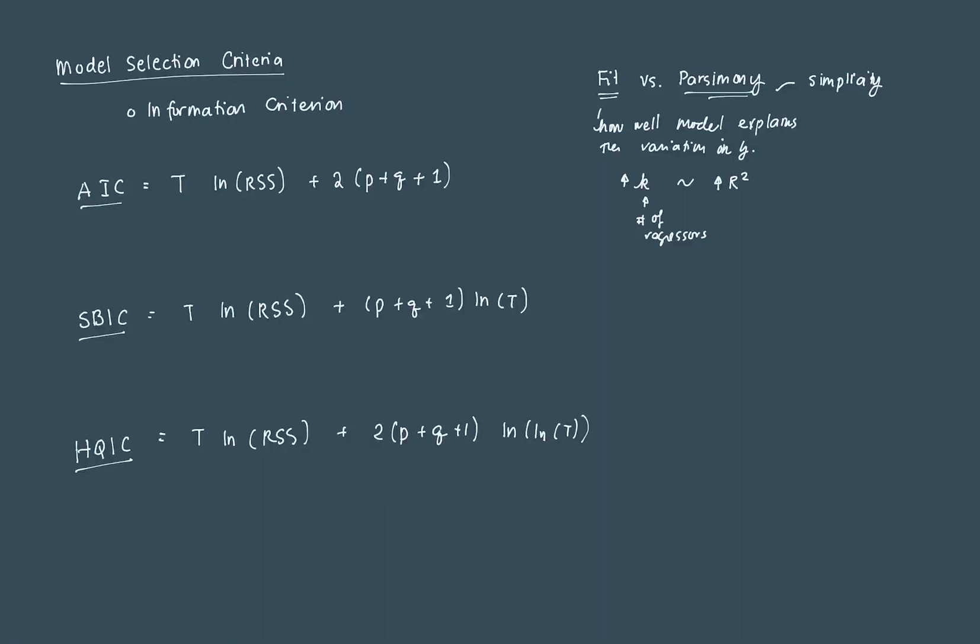We have three information criteria, which if we run a model, will have a specific value for each. Let's break down each. The most typically used is the Akaike Information Criterion, or the AIC for short. At first glance, if you look at the formula for the AIC, it might look fairly awkward, but it's actually fairly intuitive. This first part here, notice we have ln(RSS). If you recall from basic econometrics, the residual sum of squares, which is RSS, is the proportion of the variation that is not explained by the regressors.